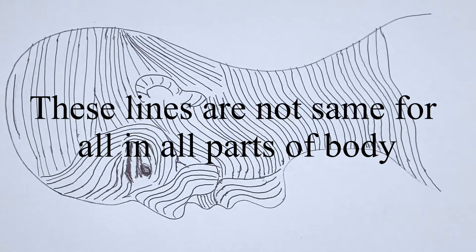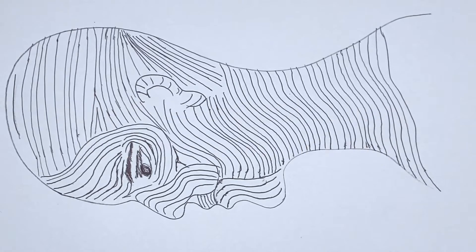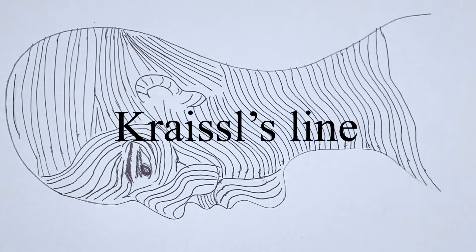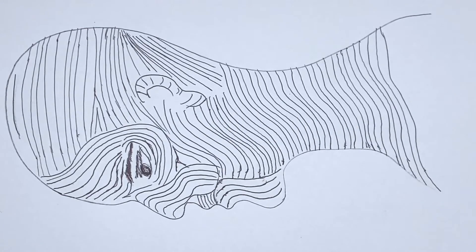In some regions of the body, there are differences between different individuals, so these lines of Langer's may not remain the same for each and every individual in all parts of the body. There is a big difference between the Krystal lines, which are the normal physiological lines in a living person.